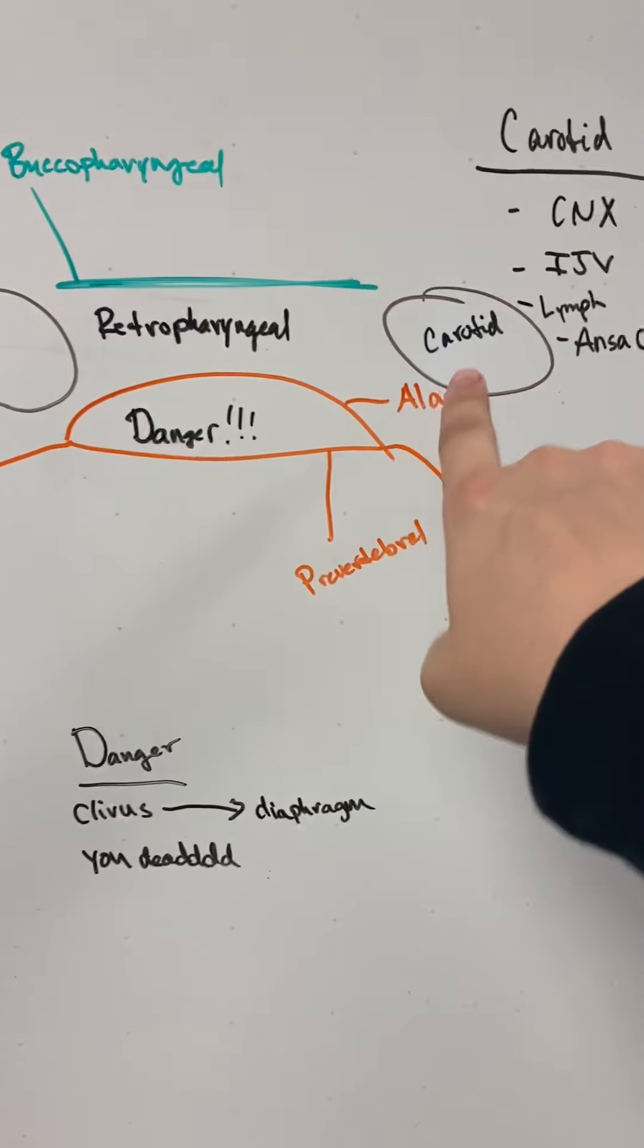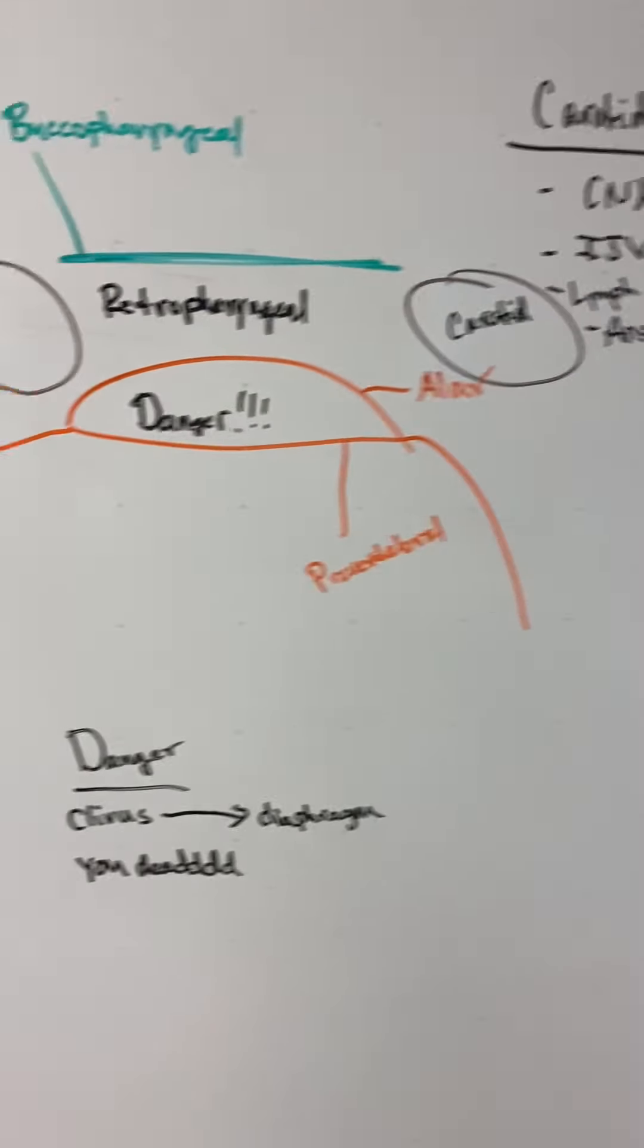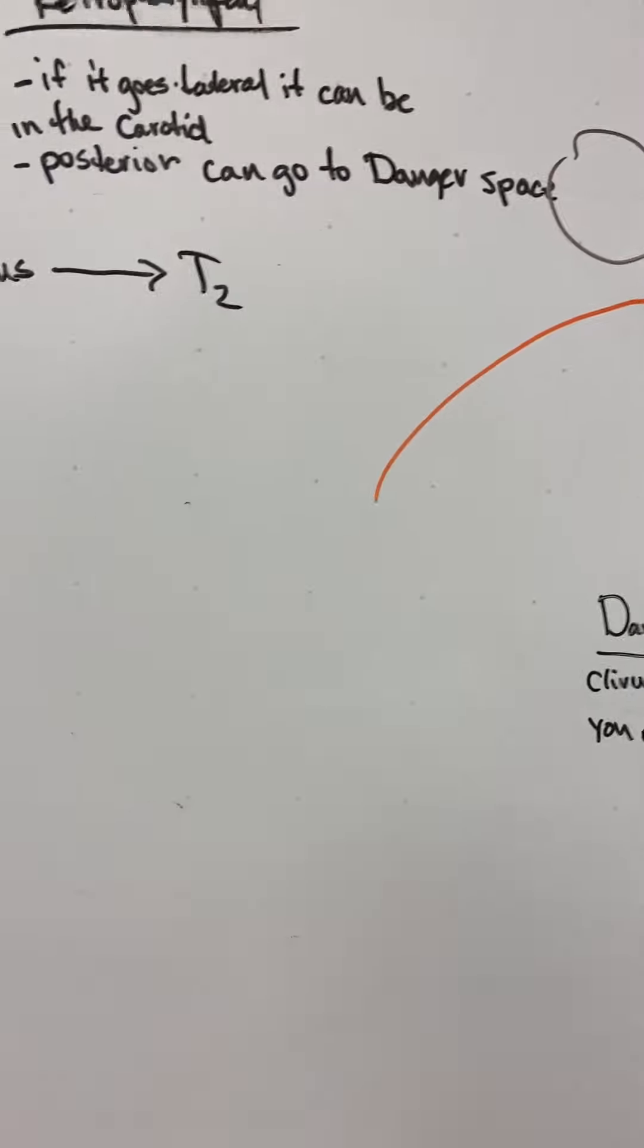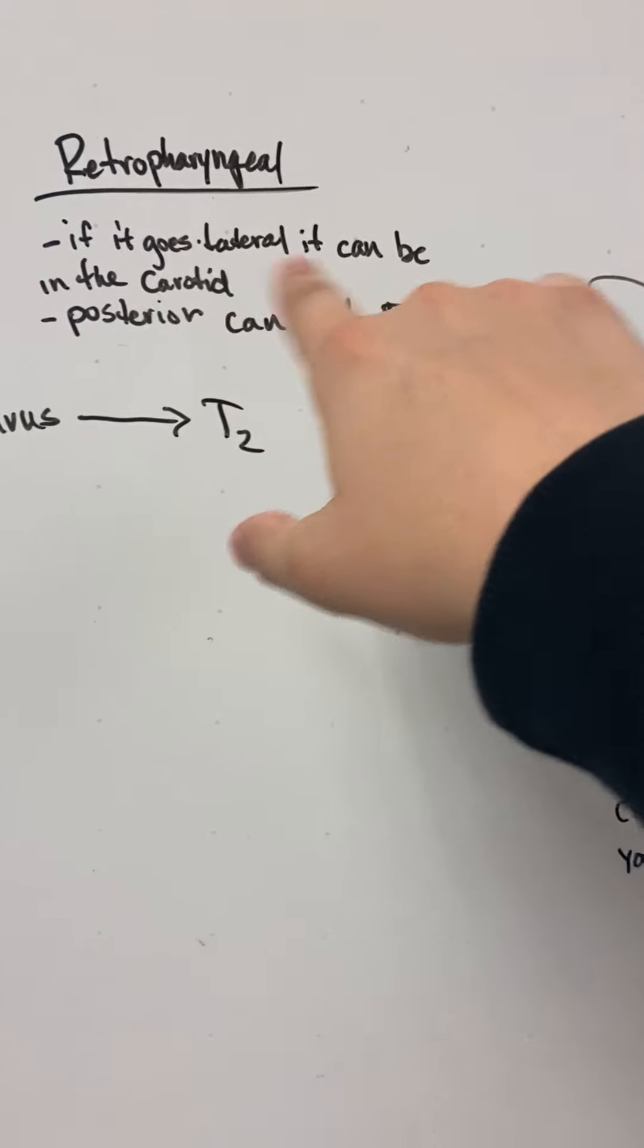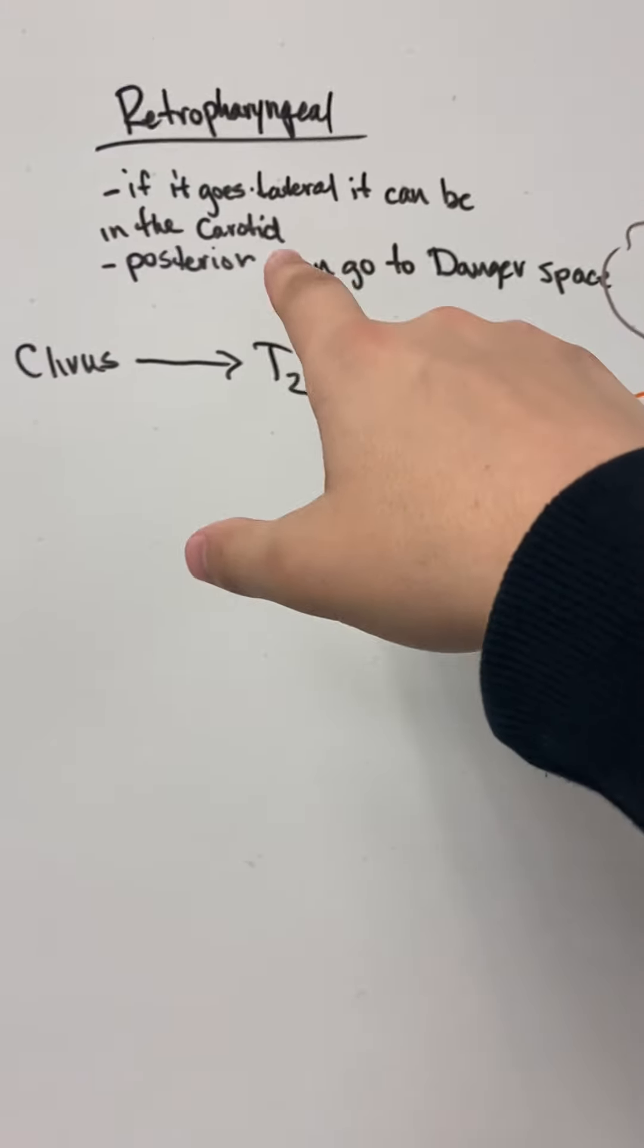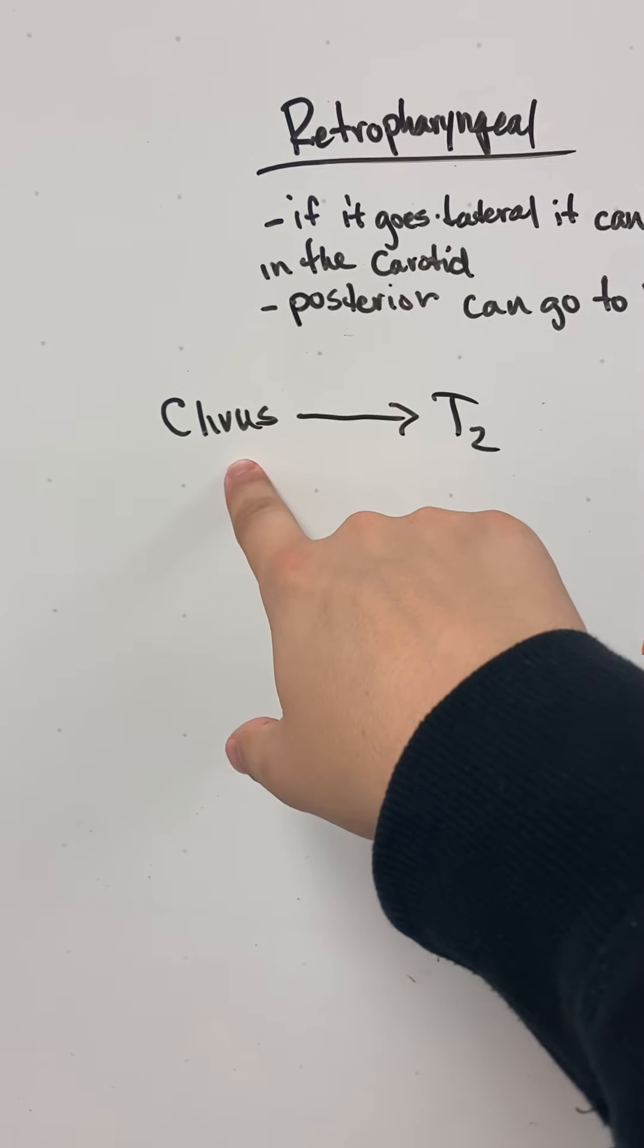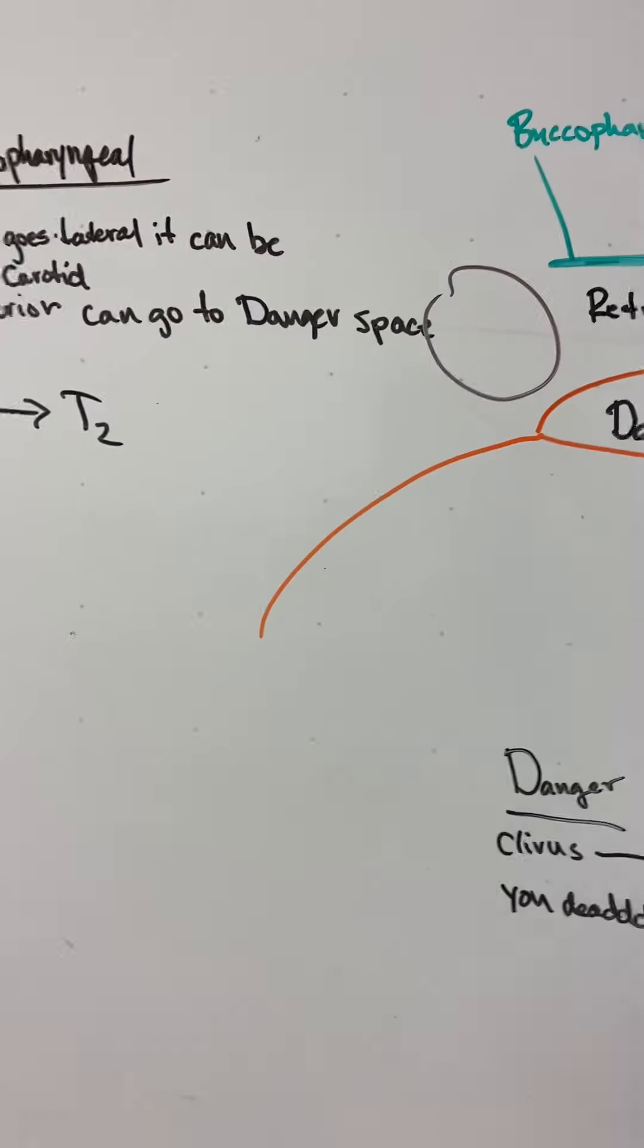So laterally to that space is the carotid sheath. Obviously we don't want that to get infected. But if it goes posteriorly, then we're in this dangerous space. So why might that be bad? From the retropharyngeal aspect, if it goes lateral, it goes into the carotid. If it goes posterior, it's dangerous. The clivus, or the base of the skull, goes all the way down to T2, fairly deep into your thoracic.